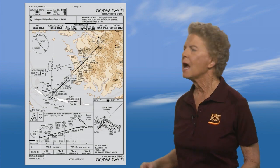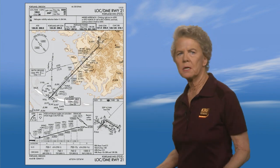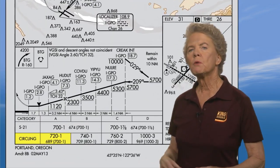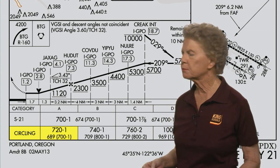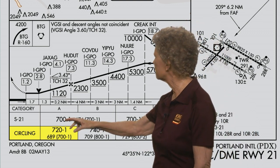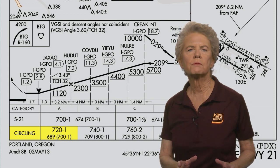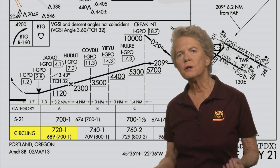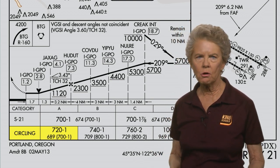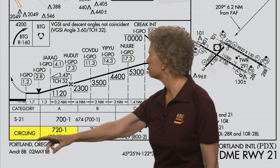Take a look now back at the localizer DME runway 21 approach into Portland and let's take a look at the minimum section again. Now we've already talked about the minimum descent altitude of 700 feet if you're flying a straight-in approach to runway 21, but notice the minimum section also has circling minimums.